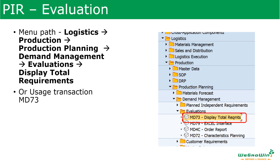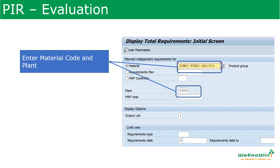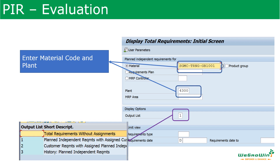Next, we need to evaluate the demand — how much is the planned quantity, how much is assigned, and what is the total assignment. To do this evaluation, use transaction MD73 or the menu path shown. Enter the material and plant. The output list has different options: total requirement without assignment, plant requirement with assignment, customer requirement with assigned plan. This helps the planner and buyer understand how much plan is remaining and how much has been consumed.